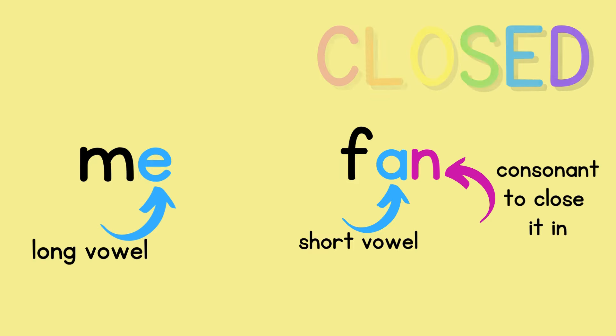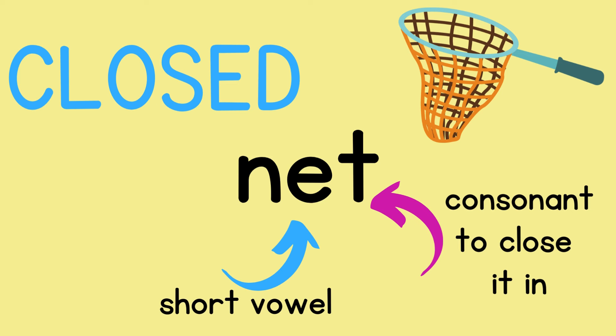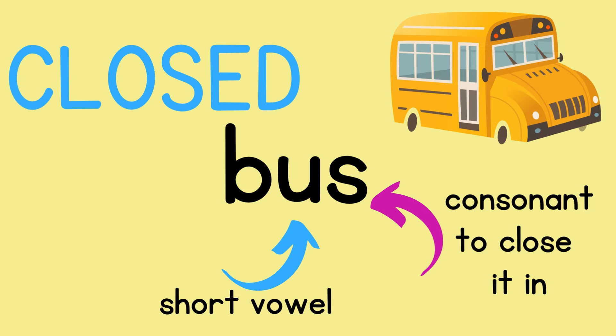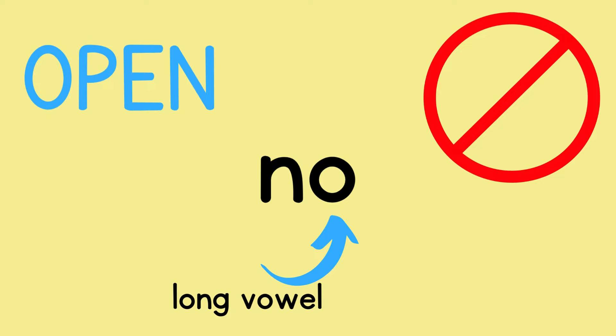Let's see if you can remember which of these words are open and which ones are closed. 'Net' — is this open or closed? Notice how it ends with T, a consonant, and the vowel says 'eh,' so net is closed. 'Bus' — open or closed? It's closed because of the short U and being closed in with an S. 'She' — open or closed? She is open because it ends with a vowel and the vowel says its long sound E. 'Kick' — open or closed? Closed. 'No' — open or closed? Open.